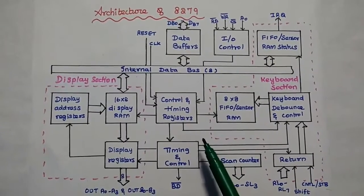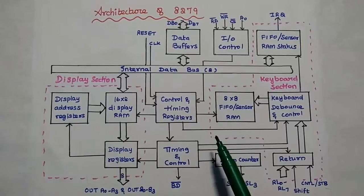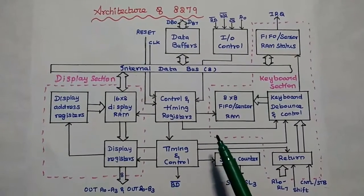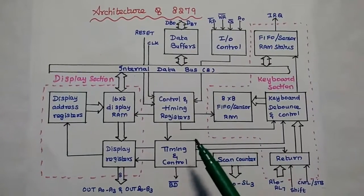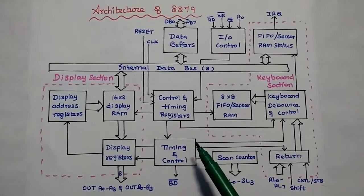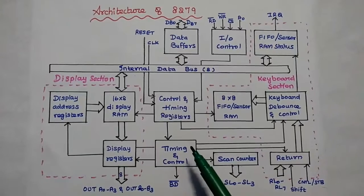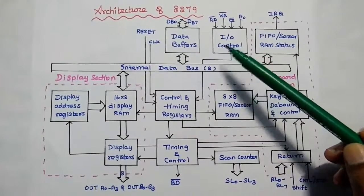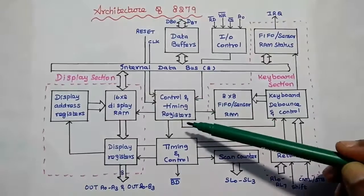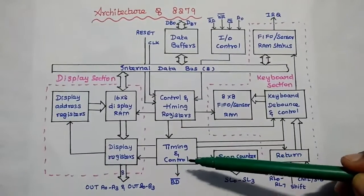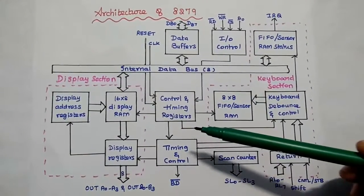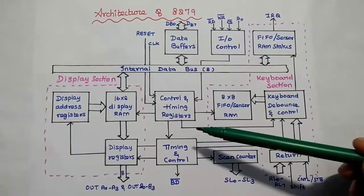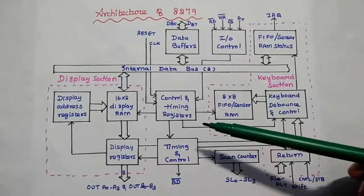This is the architecture of 8279, which has 4 important functional units. The first one is the CPU Interface Control Unit. This unit consists of the data buffers, input-output control, control and timing registers, and timing and control. This CPU Interface Control Unit is mainly used to control the operation of 8279.